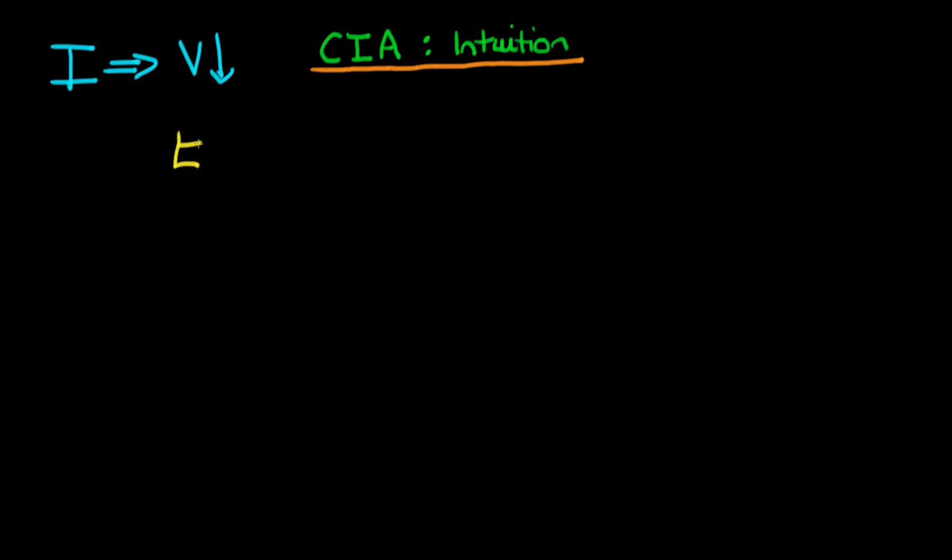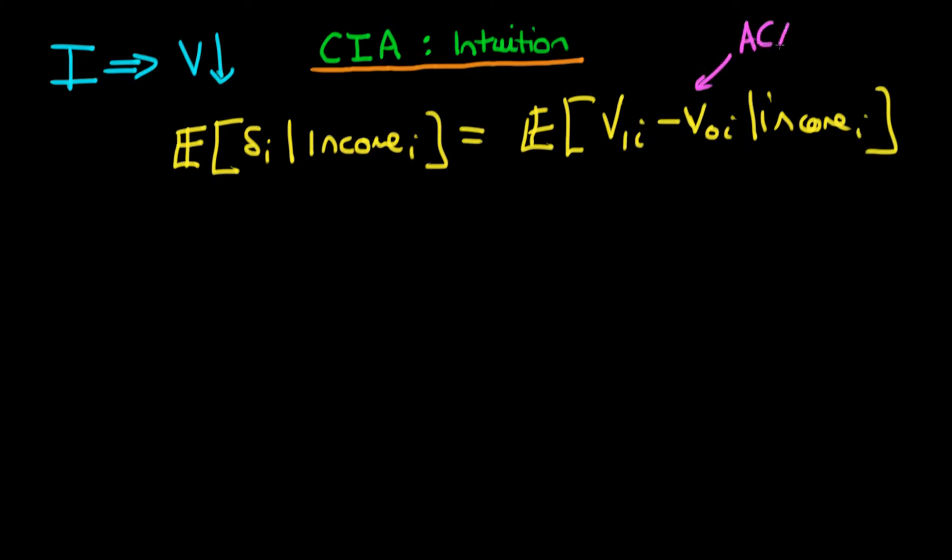So in the last video, we had that the expectation of the average or the causal effect given a district's level of income was actually equal to the expected value or the difference between V1i minus V0i given a particular district's level of income. And we call this particular term on the right hand side the average causal effect conditional on income.